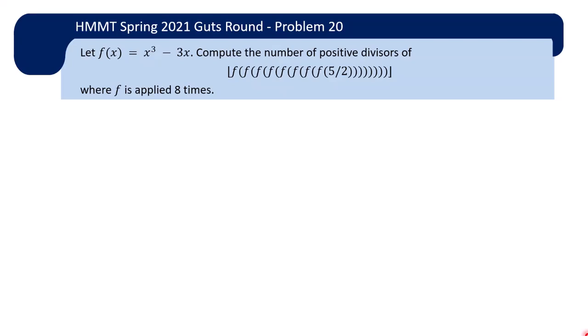So we have the function f(x) equals x cubed minus 3x and we are supposed to compute the number of positive divisors of this crazy-looking equation where you have f applied 8 times to 5 over 2 and then take the floor function of that.